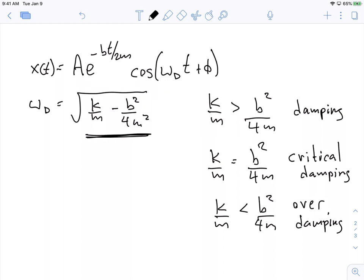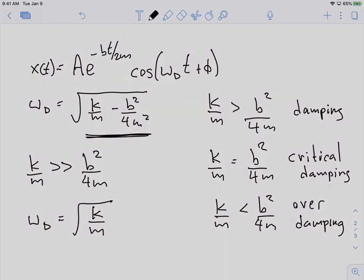And then the final case that we're going to spend a lot of time with is when k/m is much, much bigger than b²/4m². And it means that if it's much bigger, then ω_damping is essentially equal to just √(k/m). And it reproduces our original angular frequency for simple harmonic motion.